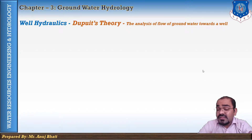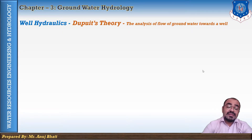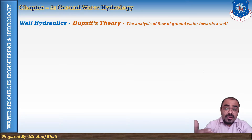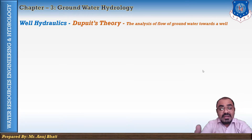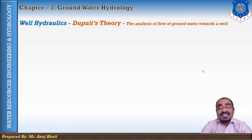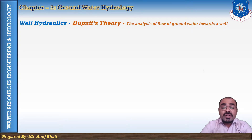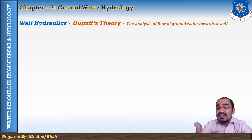The Thiem theory is based on a few assumptions: the aquifer is homogeneous; the well penetrates and receives water from the entire thickness of the aquifer; velocity of flow is proportional to the tangent of the hydraulic gradient; flow is assumed horizontal and uniform everywhere; the coefficient of transmissibility is constant at all places and times; and natural groundwater regime remains constant throughout.